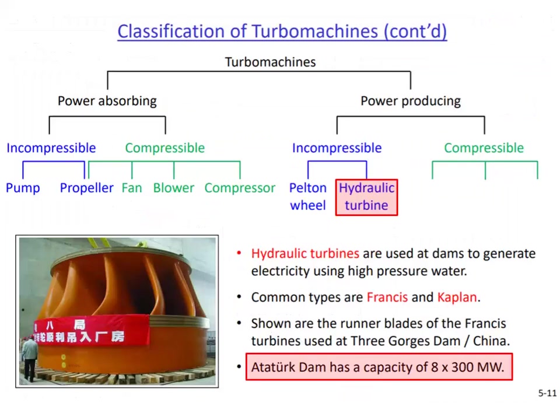The Atatürk Dam is one of the largest dams in Turkey. It has eight Francis type turbines each producing 300 megawatts of power.